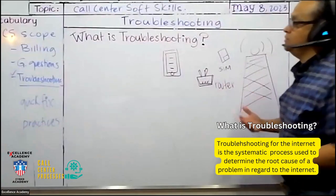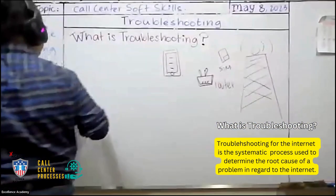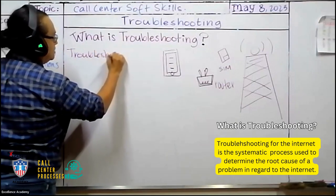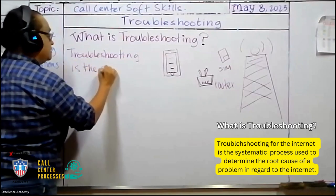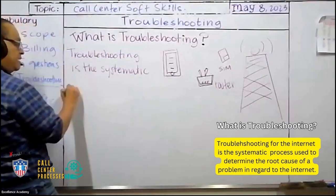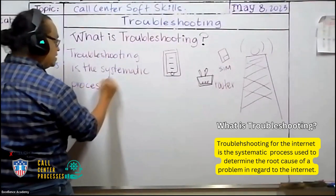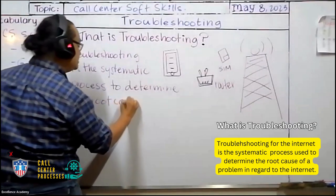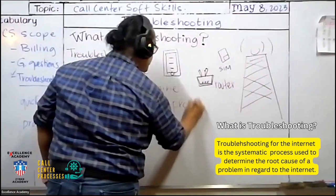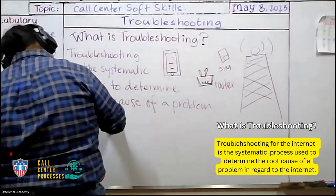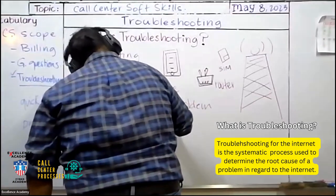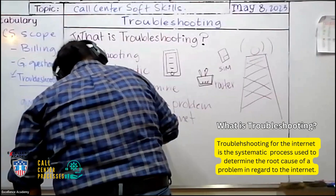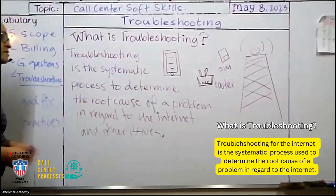So, to begin with, we're going to give you a quick definition. What is troubleshooting? So, troubleshooting, we'll use troubleshooting as a noun here. Troubleshooting is the systematic process to determine the root cause of a problem in regard to the internet and other issues. So, we're going to start with a general definition of what is troubleshooting. Let's go over it.